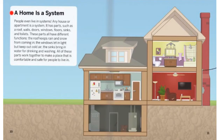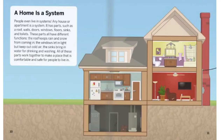A home is a system. People even live in systems. Any house or apartment is a system. It has parts such as a roof, walls, doors, windows, floors, sinks, and toilets. These parts all have different functions. The roof keeps the rain and snow from coming in. The windows let in light but keep out cold air. The sinks bring in water for drinking and washing. All of these parts work together to make a place that is comfortable and safe for people to live in.